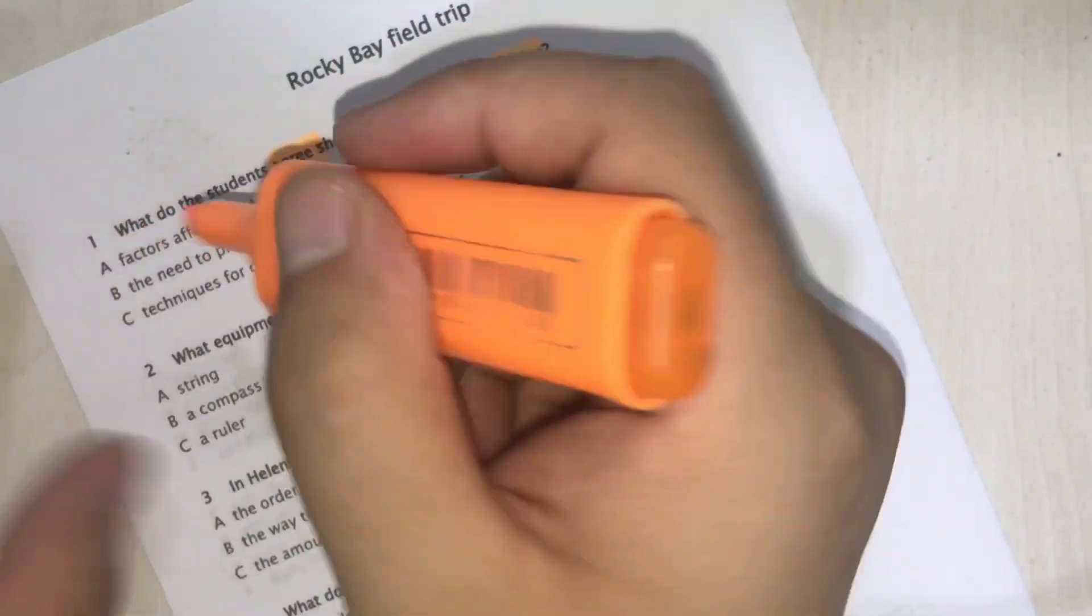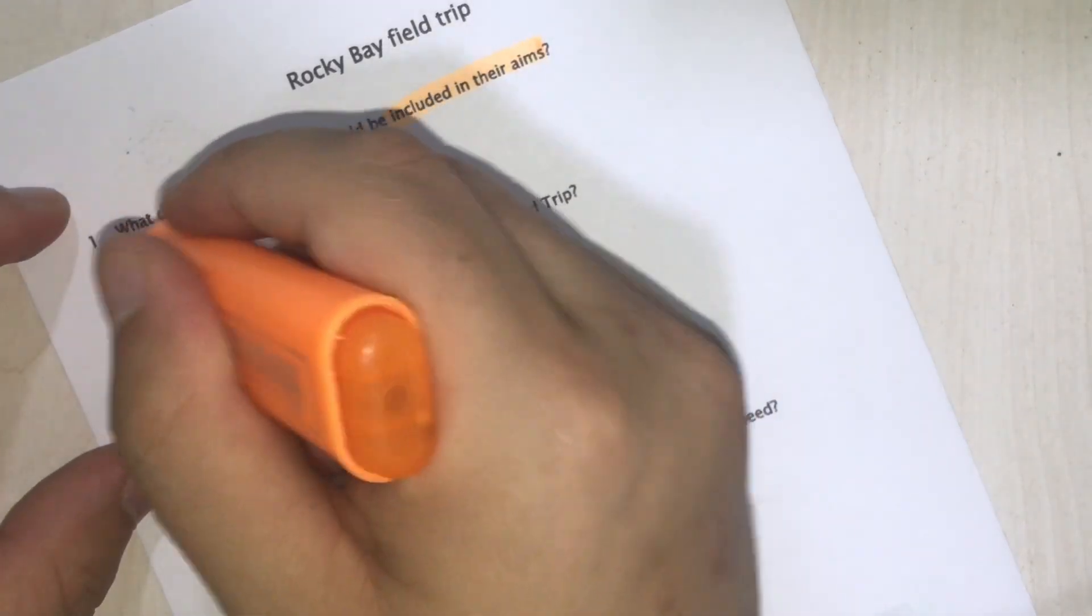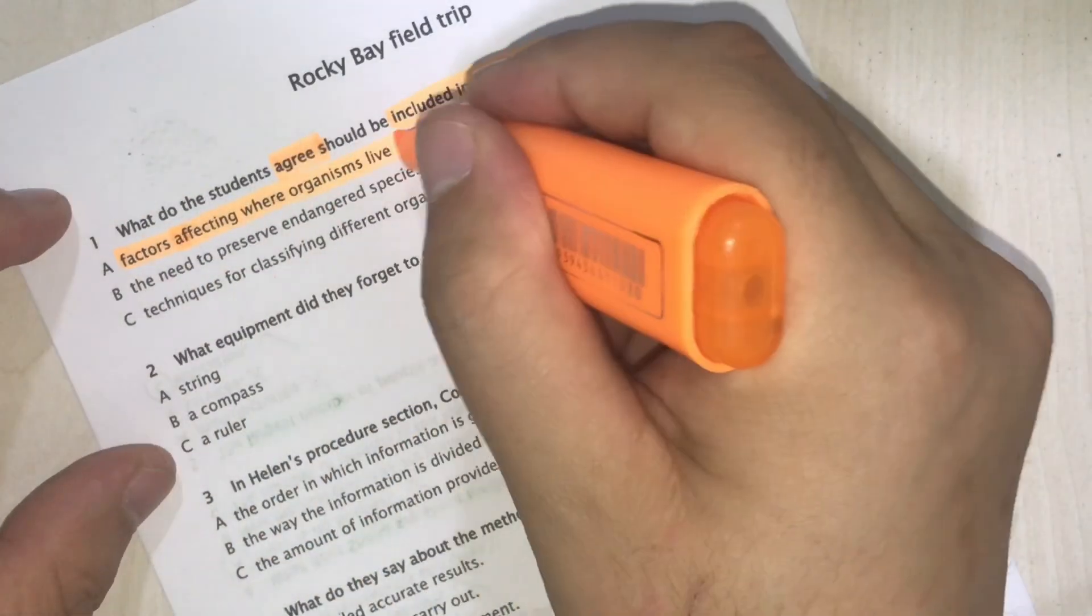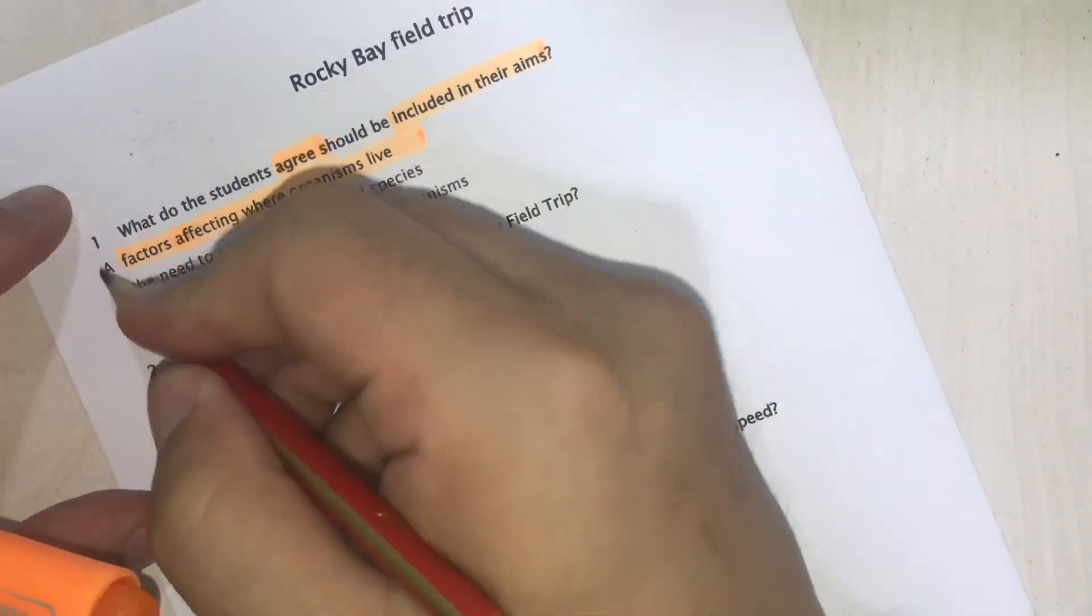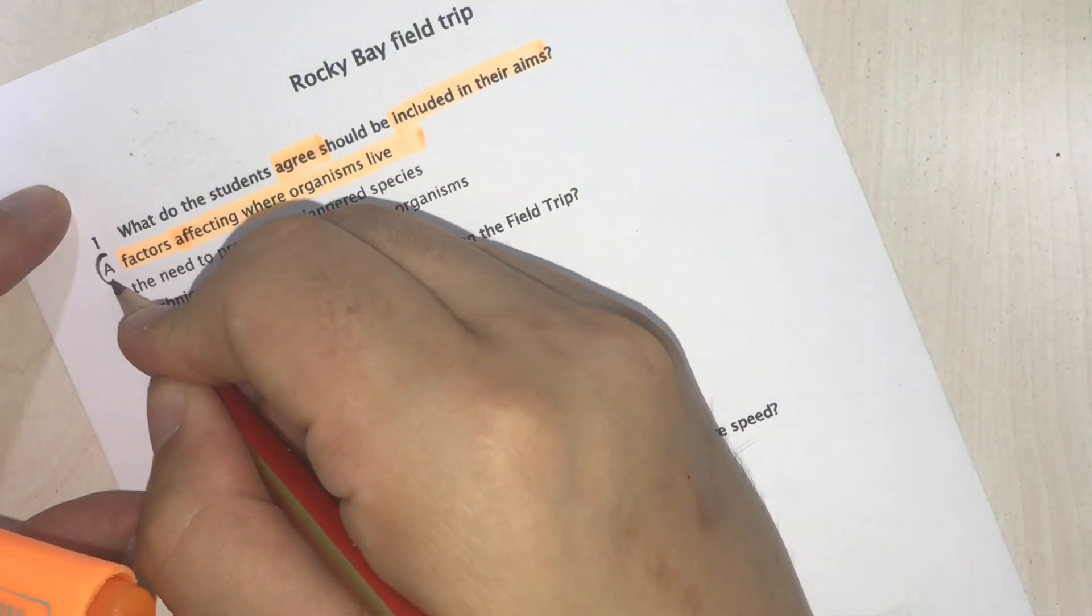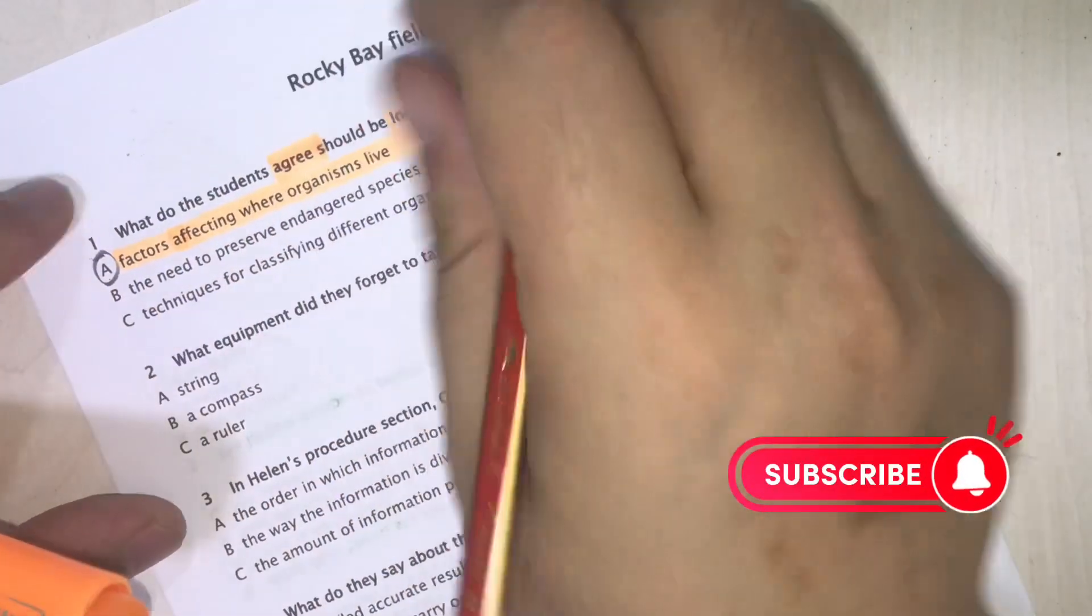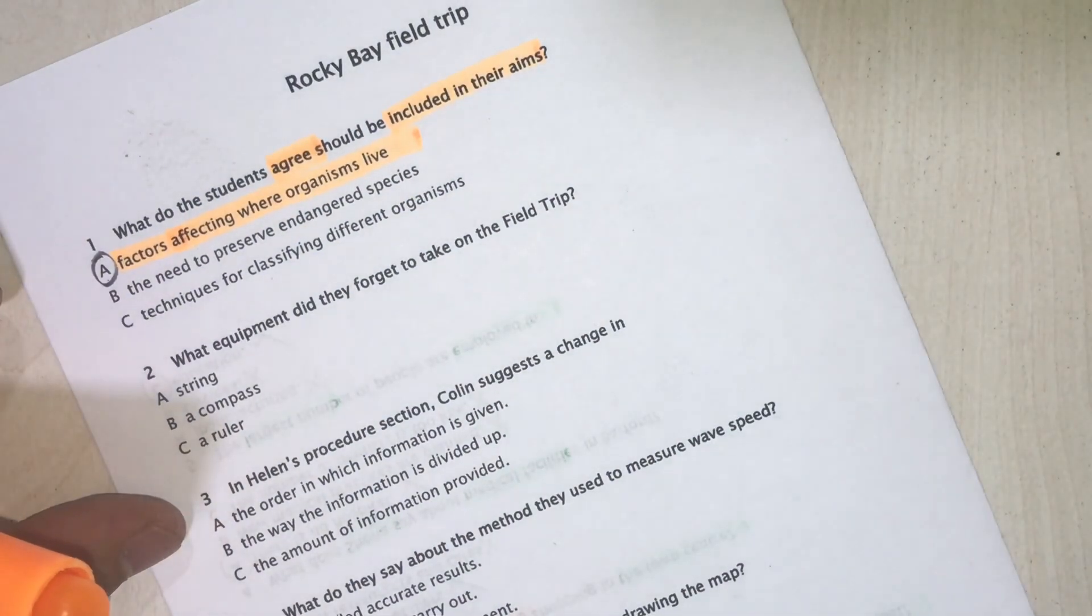So this is our key point where she said 'alright,' so the answer is going to be A here because of factors affecting organisms. I want to mark this because that's what the guy said, but in a paraphrased way using different vocabulary.